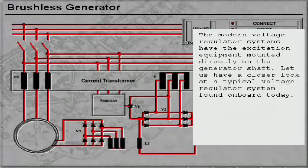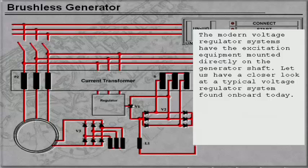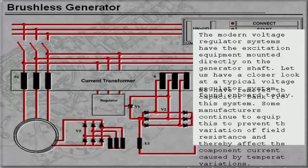The modern voltage regulator systems have the excitation equipment mounted directly on the generator shaft. Let us have a closer look at a typical voltage regulator system found on board a ship today. We have removed the capacitor bank from this system. Some manufacturers do this to prevent the variation of field resistance and thereby affect the component current caused by temperature variations.